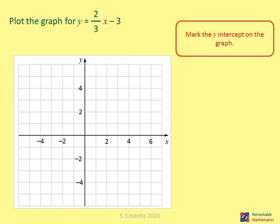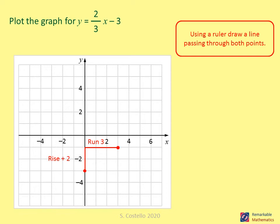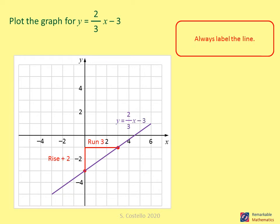Mark the y-intercept, which here is minus three. Then mark another point on the line using the gradient of two over three — a rise of two and a run of three. Mark that point, use a ruler to draw a line passing through both points, and always label your line once drawn.